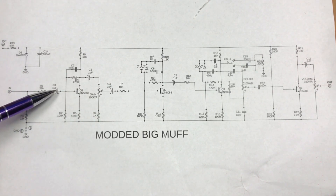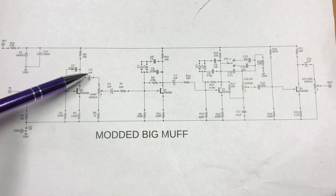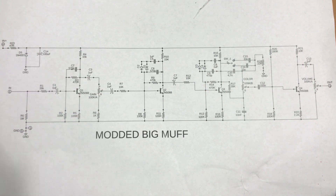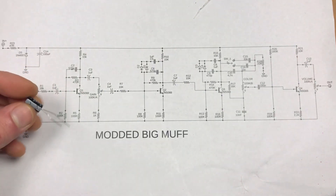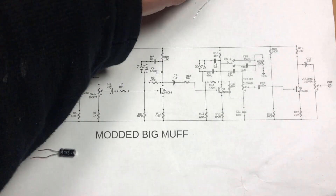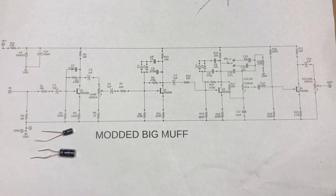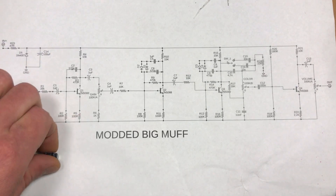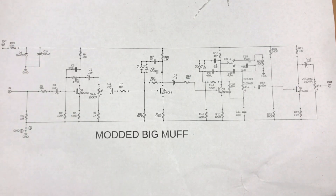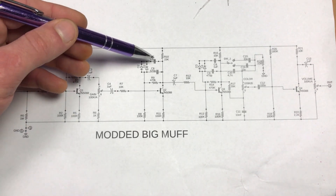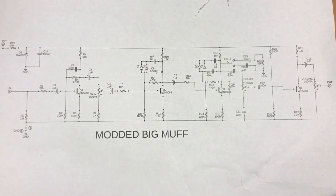Here you can see electrolytic capacitor symbols. We use a few of them in this circuit. On an electrolytic capacitor symbol there's a plus sign, so be sure to place it at the right angle. And remember, the shorter leg is negative.